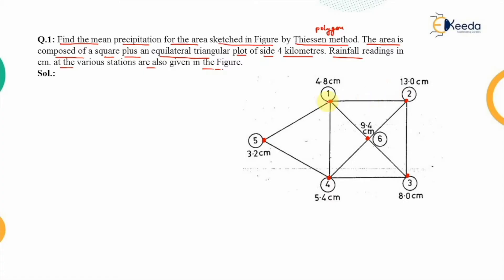The first step in the Thiessen polygon method is to connect the adjacent stations by straight lines, which has already been done. After that, the next step is to draw the perpendicular bisectors of the joined sides. The perpendicular bisector between station one and five is this blue line, then correspondingly between four and five, and between one and four.